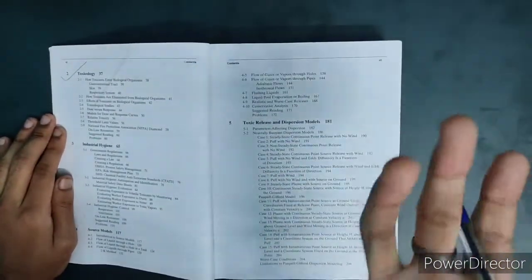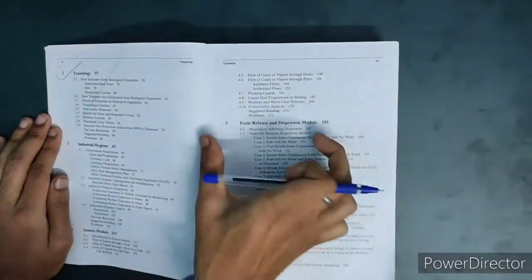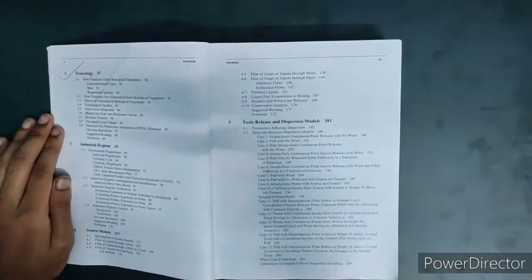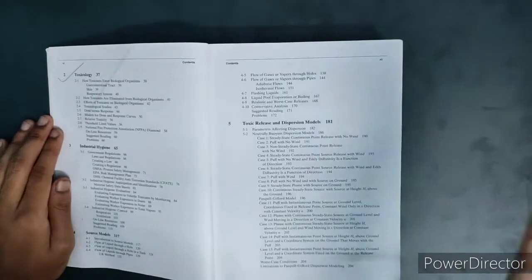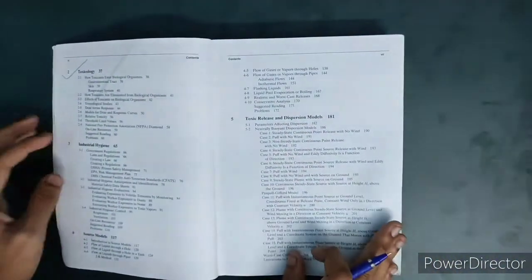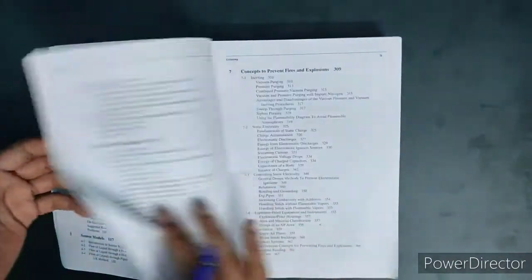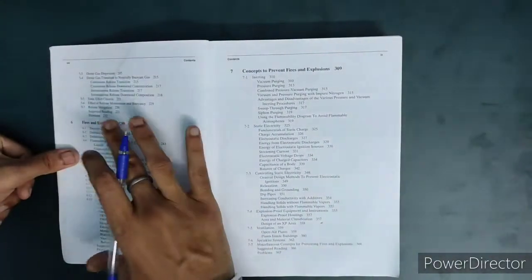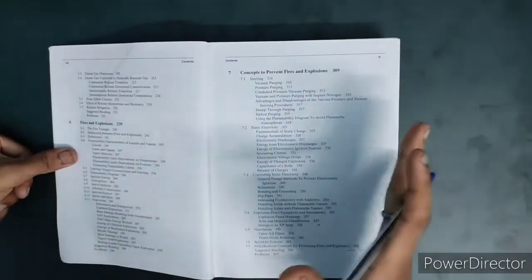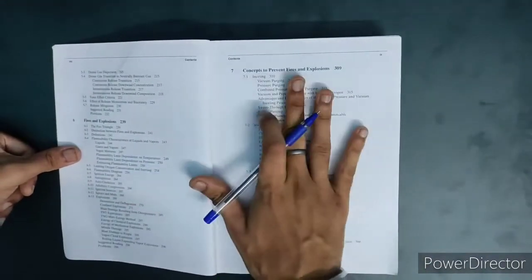That source model is applicable to all sorts of gases as well as liquids. But when we talk about the toxic and dispersion models, it means if any waste as well as vapors and gases are releasing by the use of any chimney or any stack, how they are going to mix with the environment. Chapter six is regarding fire and explosion. Chapter seven is concepts to prevent fires and explosions.